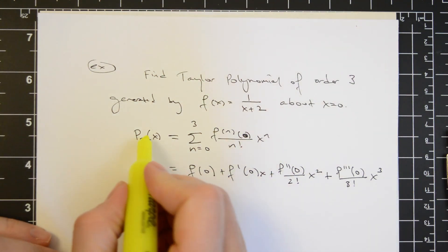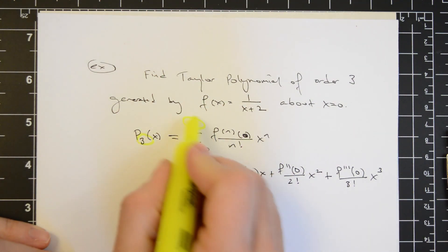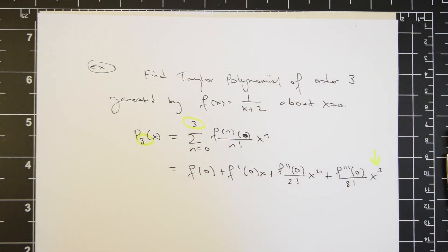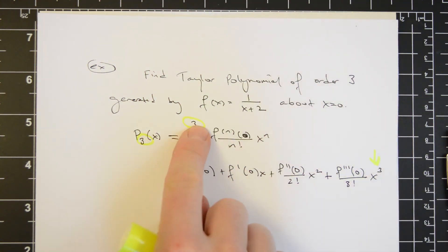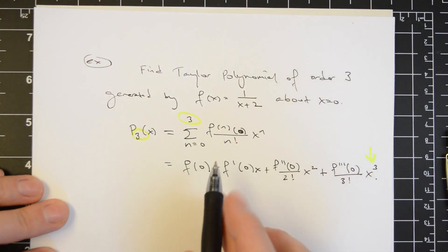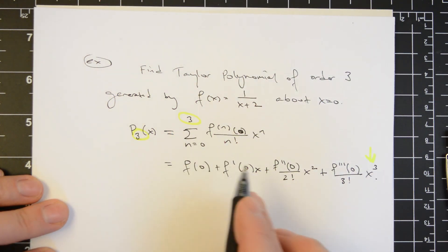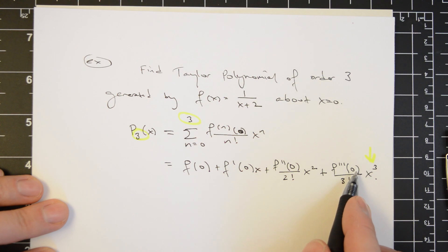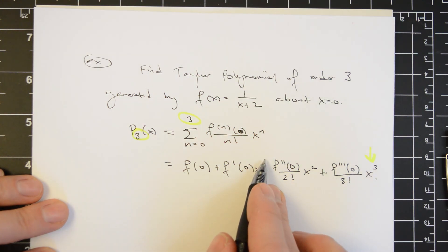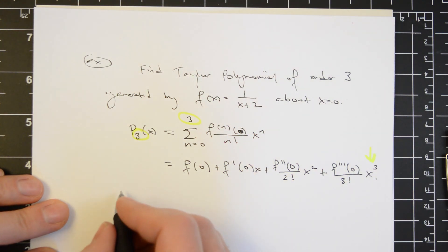In general, this number will match this number, but the last value of the power of the polynomial may be different, as we'll see in a later example. In order to calculate this polynomial, we need to find f of 0, f prime of 0, f double prime of 0, and f triple prime of 0, and plug them into this polynomial. Let's do that.